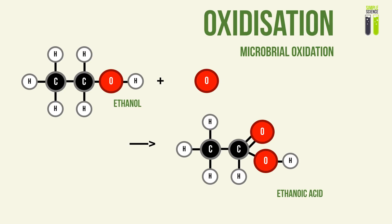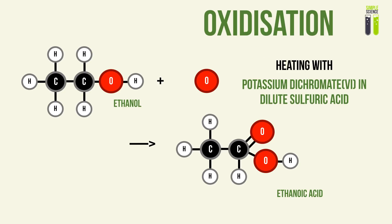The next type of reaction is oxidation. What differs from combustion is the final product — we're not producing carbon dioxide, but a different type of organic compound. Where ethanol reacts with oxygen, the first method is called microbial oxidation, whereby we use microbes to aid oxidation, producing ethanoic acid. A more prominent method is heating with an oxidizer — potassium dichromate in dilute sulfuric acid — which also oxidizes an alcohol to form ethanoic acid.